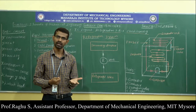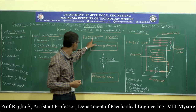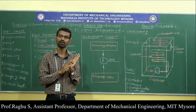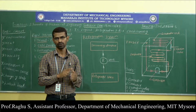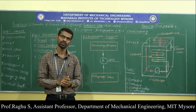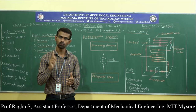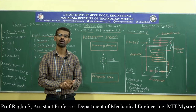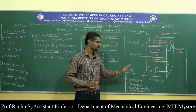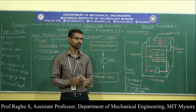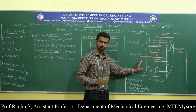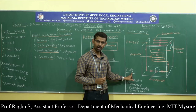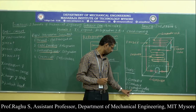What do you mean by refrigerator? The device used for the refrigeration process is called a refrigerator. We have two types: vapour compression refrigerator and vapour absorption refrigerator. The parts of a refrigerator are compressor, condenser, expansion valve, and evaporator.